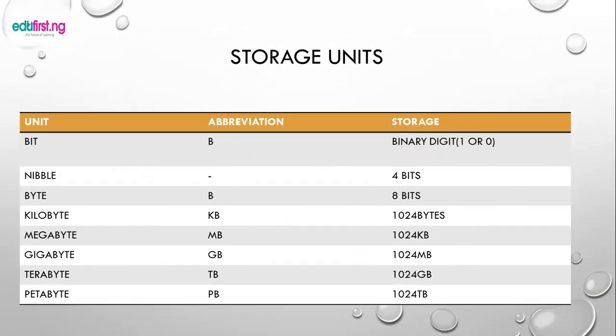Number one, we have the bit. Bits are the binary digits, that is zero or one. We have the nibble — the storage capacity of a nibble is four bits; it can consist of combinations like 0011, 1111, or 0000. We have the byte — a byte consists of eight bits or characters.